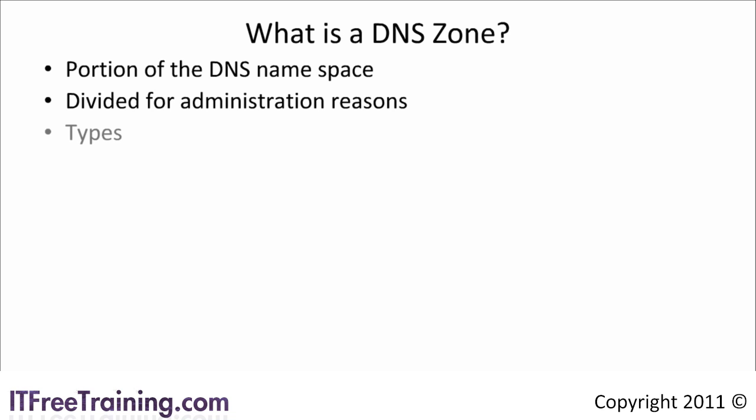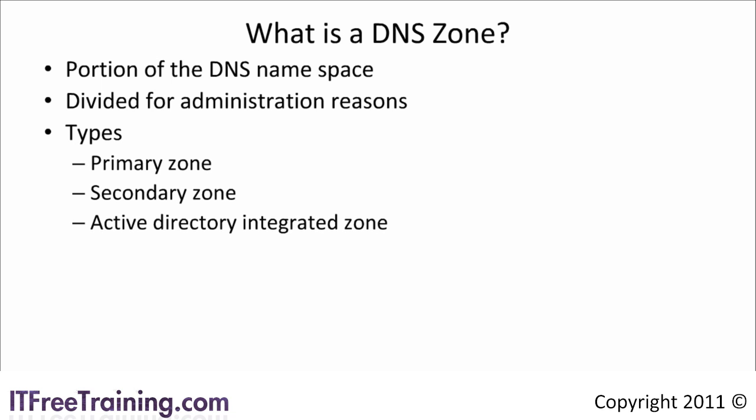There are many different types of zones. Later on in this video I will look at each zone type in more detail, but the types are primary, secondary, active directory integrated and stub zone. Each of these zones contains all the records for that zone, with the exclusion of a stub zone which contains only records from an authority zone on another DNS server.